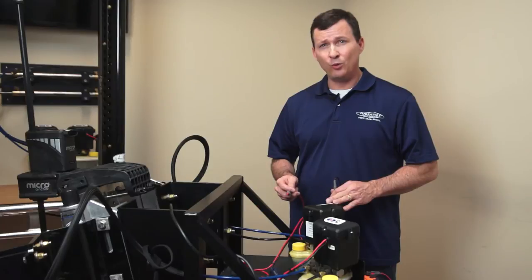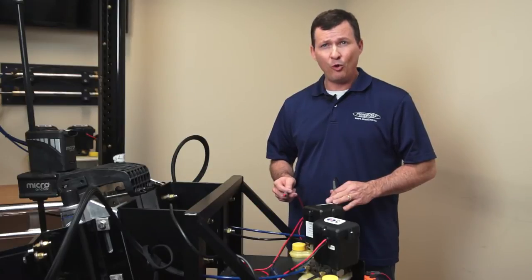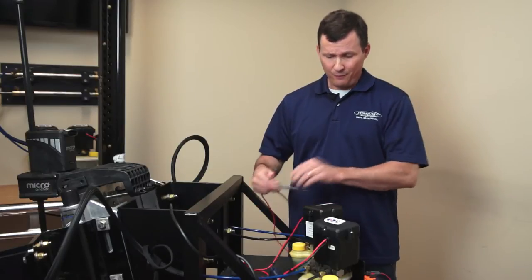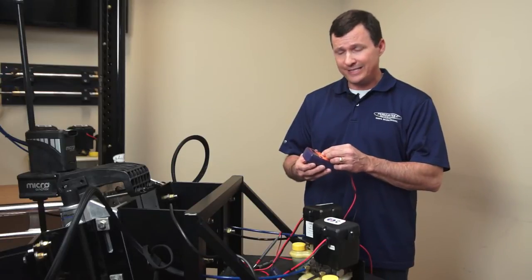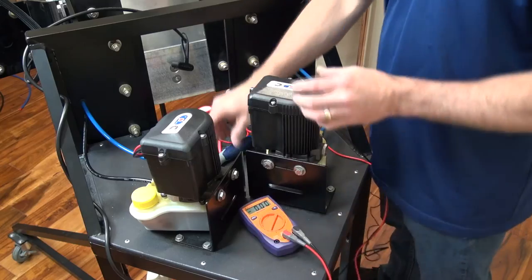Today I'm going to show you how to check the voltage on the circuit board of your PowerPull pump. First, get a digital multimeter and set it to 20 volt DC, then you want to remove the cap of your pump.